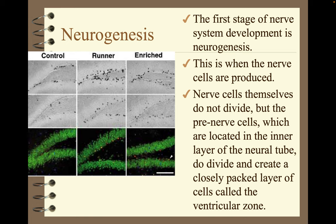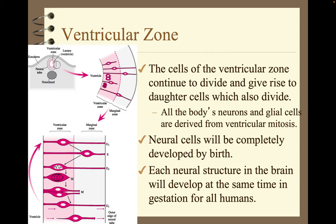The first stage of nervous system development is neurogenesis — this is when the nerve cells are produced. Nerve cells themselves do not divide, but the pre-nerve cells, located in the inner layer of the neural tube, do divide and create a closely packed layer called the ventricular zone. The cells of the ventricular zone continue to divide and give rise to daughter cells, which also divide. All the body's neurons and glial cells are derived from ventricular mitosis. Neural cells will be completely developed by birth, and each neural structure in the brain will develop at the same time in gestation for all humans.